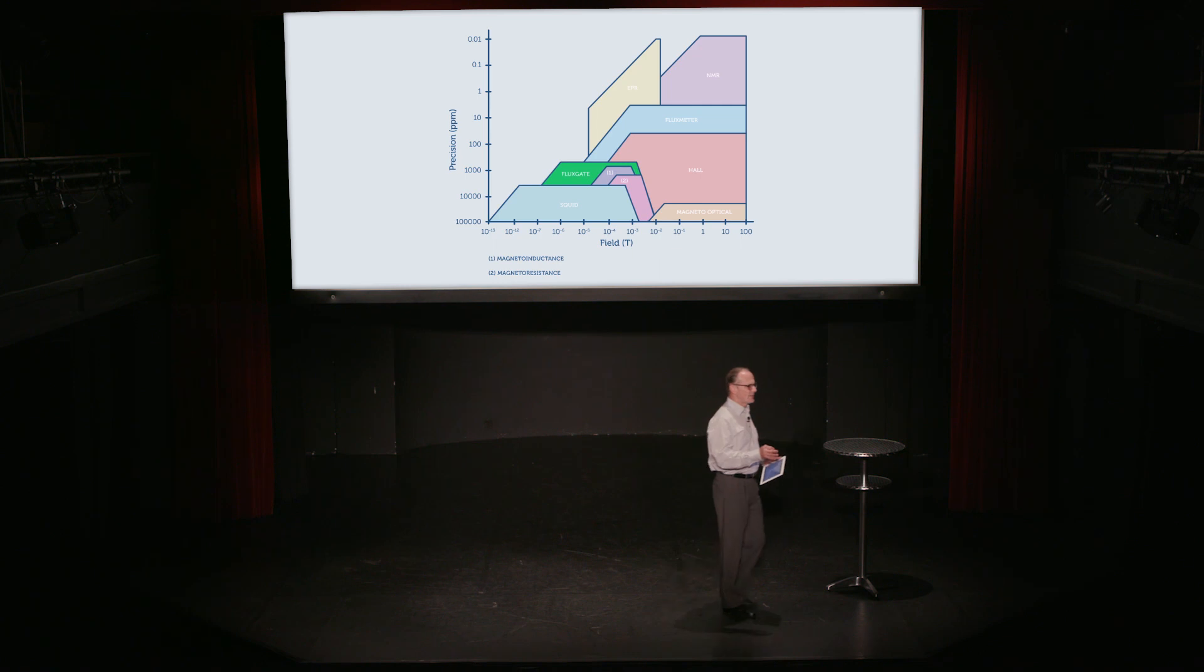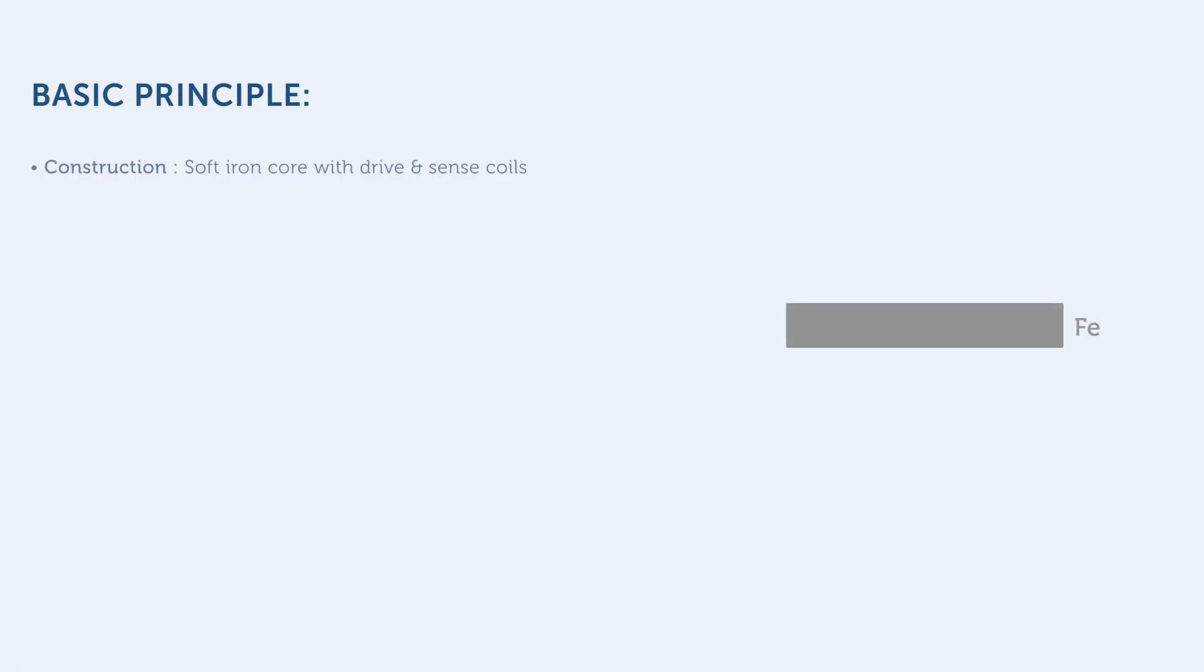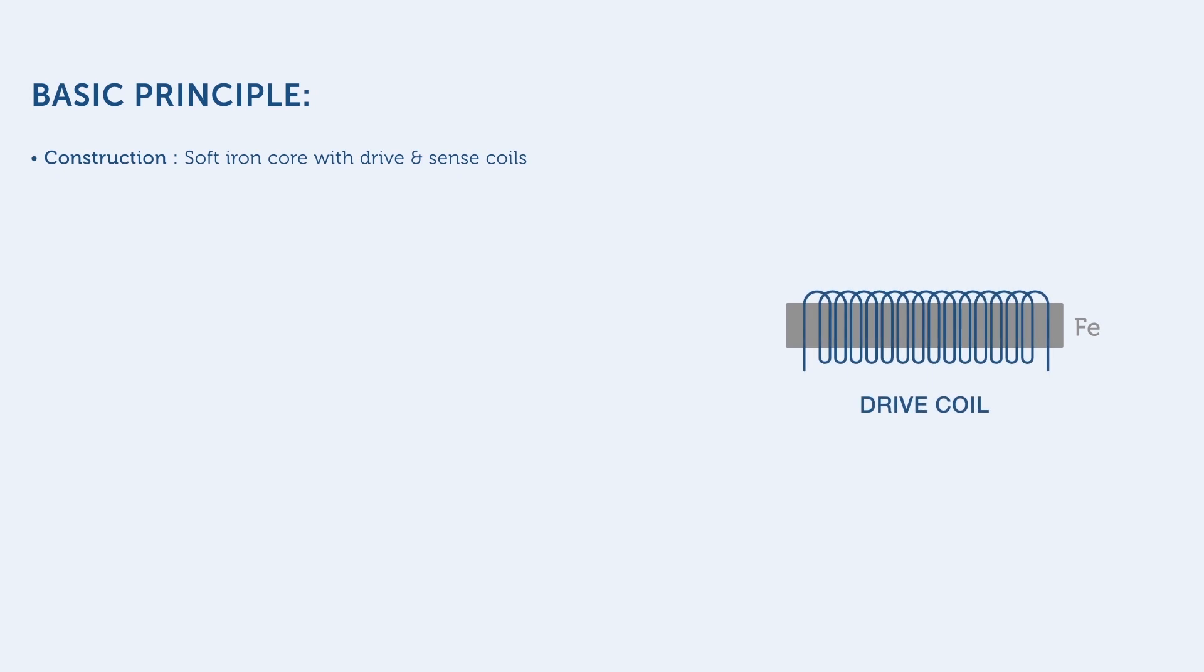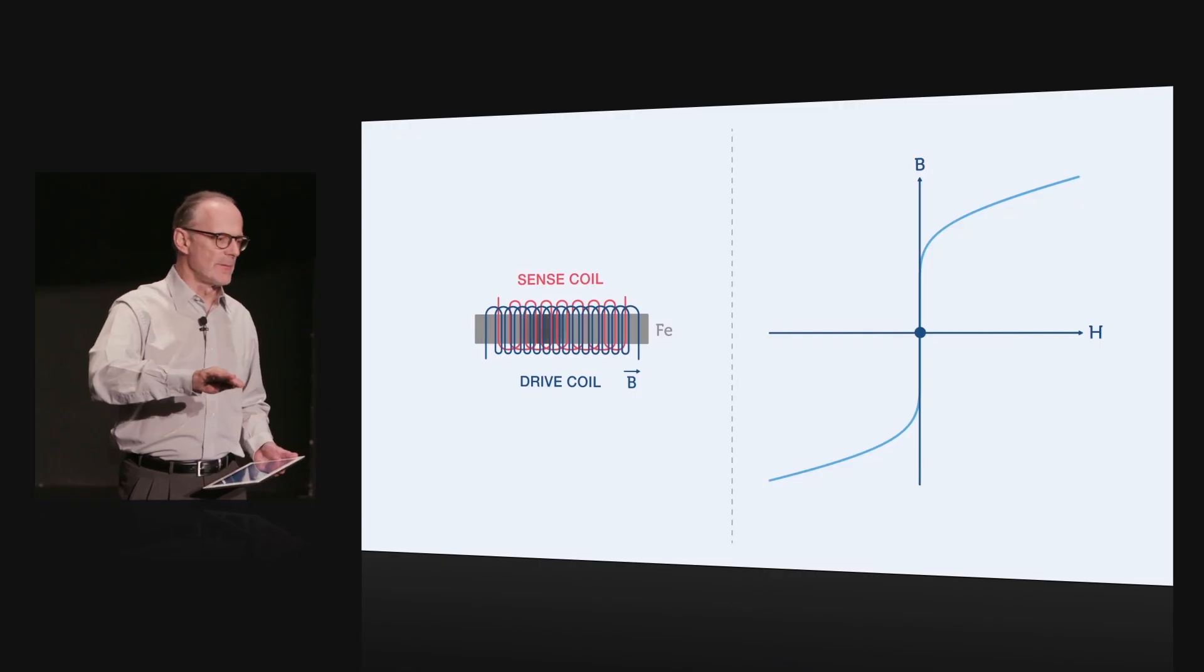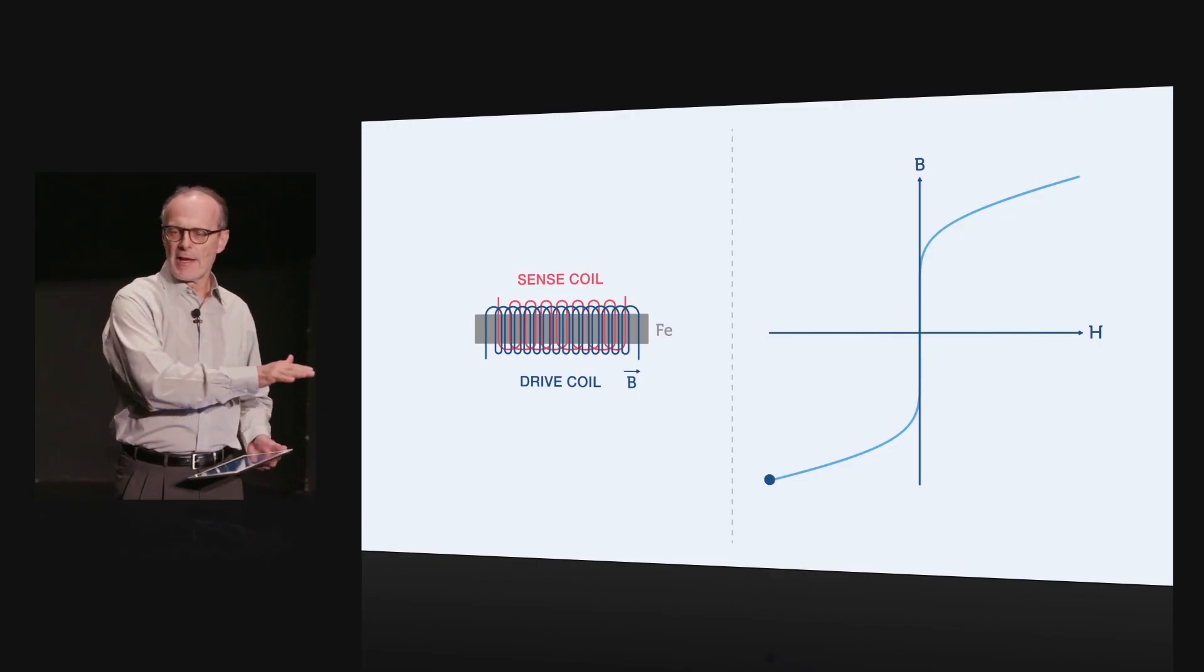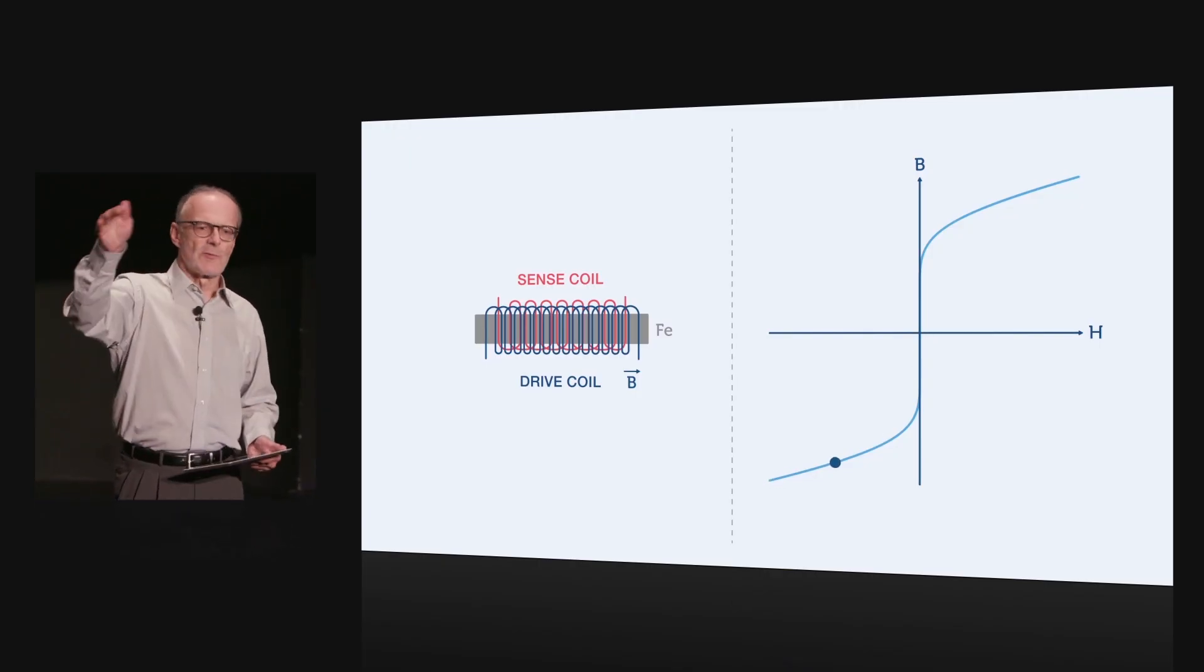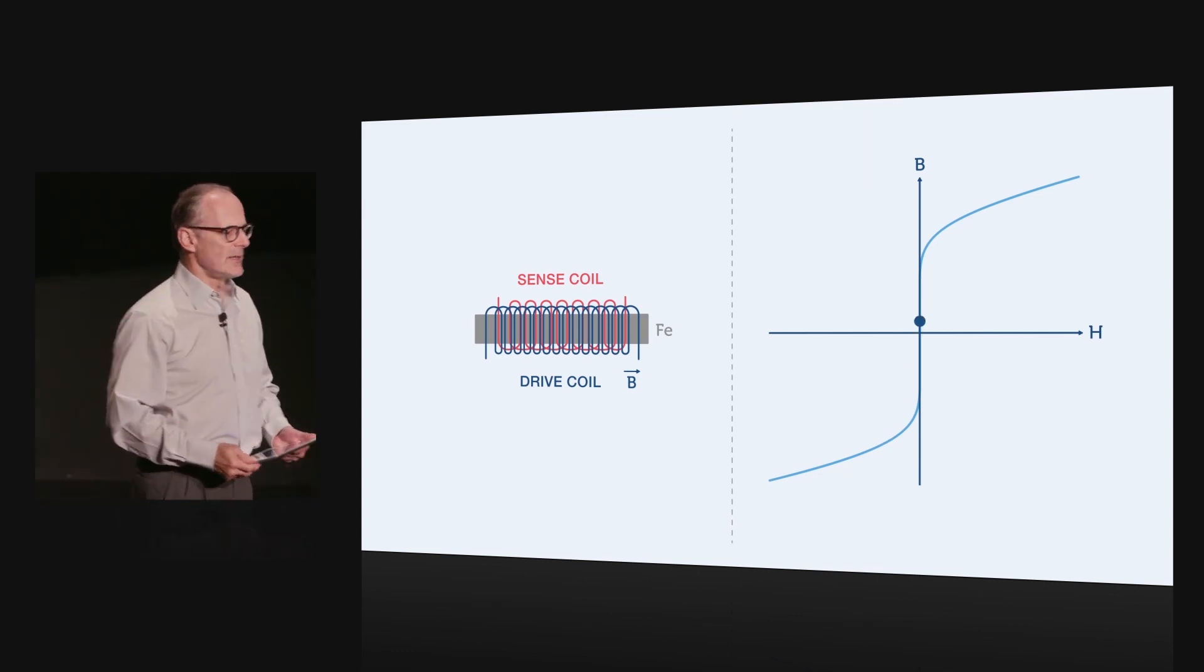A flux gate consists of three parts. There's a soft iron core, there's a drive coil, and there's a sense coil. The drive coil drives the soft iron core into saturation in the positive direction, back out of saturation, and into saturation in the negative direction. So it traverses the entire hysteresis loop.